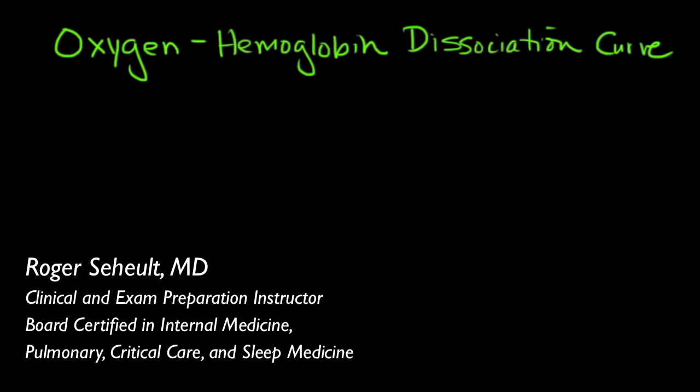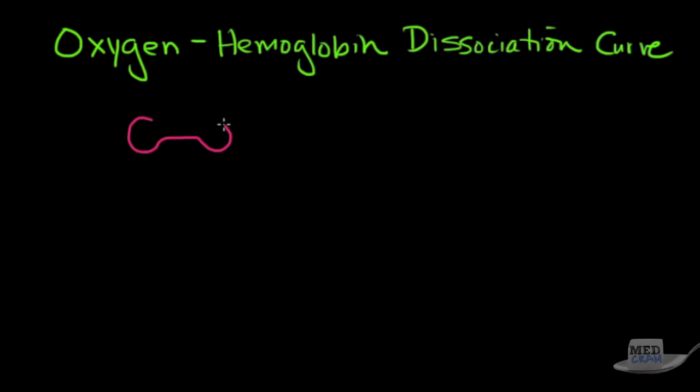Welcome to another MedCram lecture. We're going to talk about the effect of different things on the oxygen-hemoglobin dissociation curve. So we've got a red blood cell from end on. It looks like that with a little bit of a bulge in the middle, and that's because it's lost its nucleus.